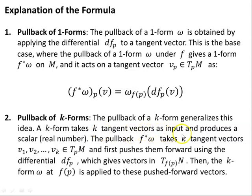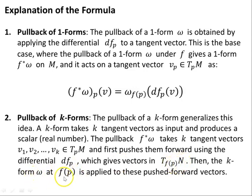The pullback of a K-form generalizes this idea. A K-form takes K tangent vectors as input and produces a scalar, a real number. The pullback F asterisk omega takes K tangent vectors V1, V2, ..., VK belonging to the tangent space of the manifold at P, and first pushes them forward using the differential DF at the point P, which gives vectors in the tangent space of the manifold N at F of P. Then the K-form omega at F of P is applied to these push-forward vectors.